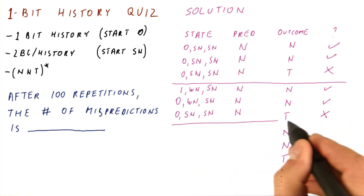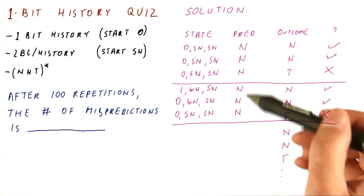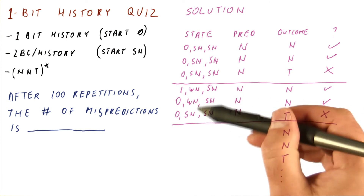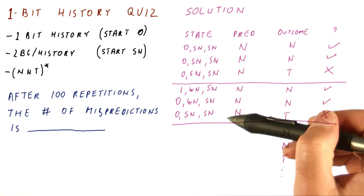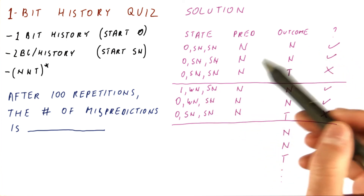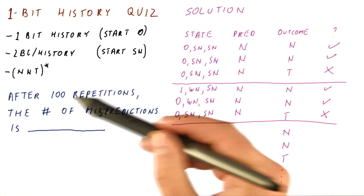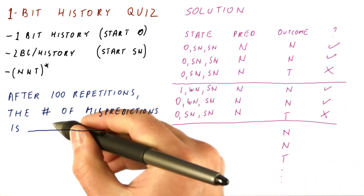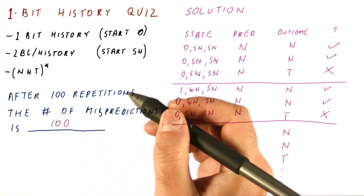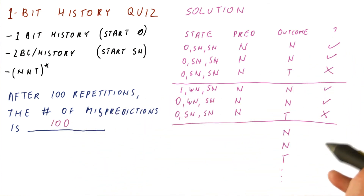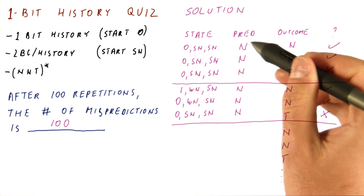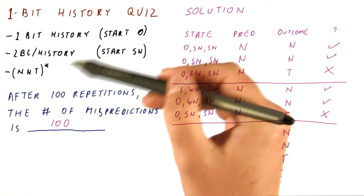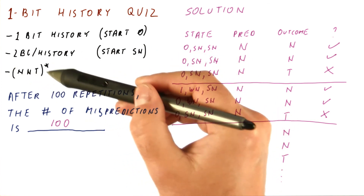This concludes round two. At the end of round two, we have the same state that we had at the end of round one. So what happened in round two will repeat for all remaining rounds. Overall, in 100 repetitions of this pattern, each repetition produces a single misprediction. So the correct answer is 100 mispredictions, or one third of our decisions are wrong. As you can see, the one bit history predictor is not a great predictor for this type of pattern.